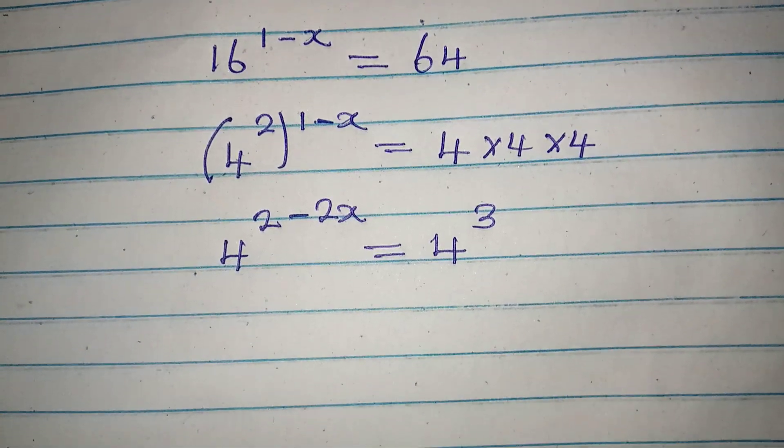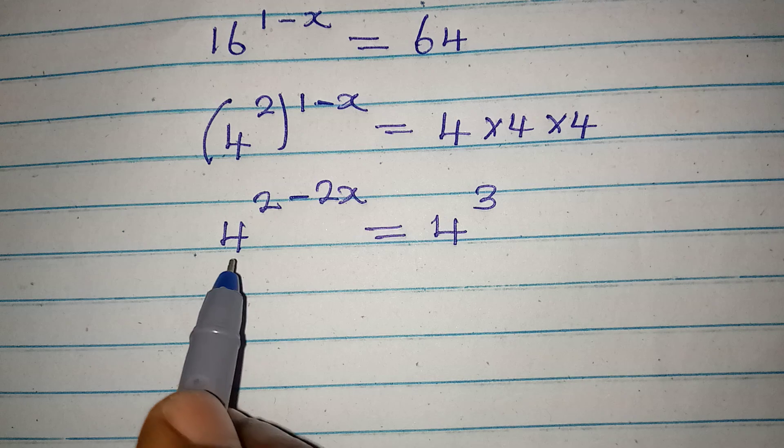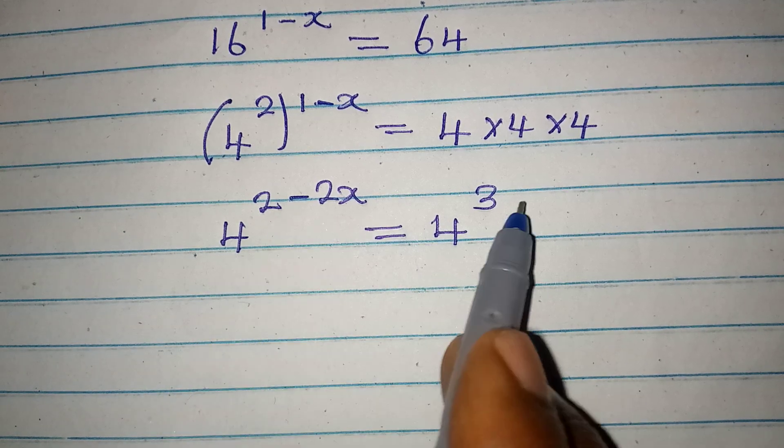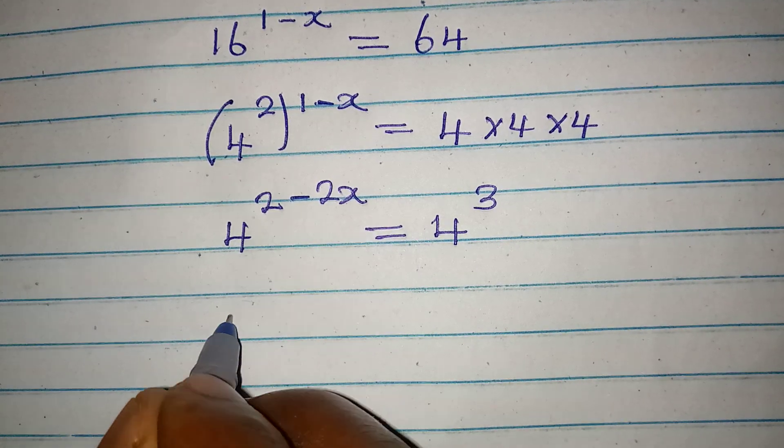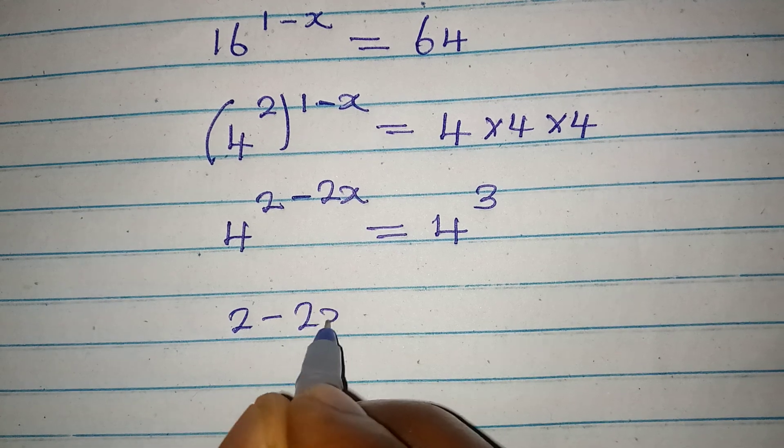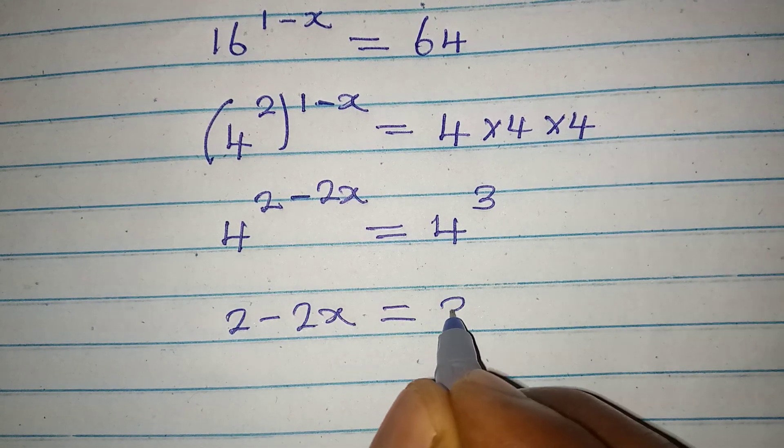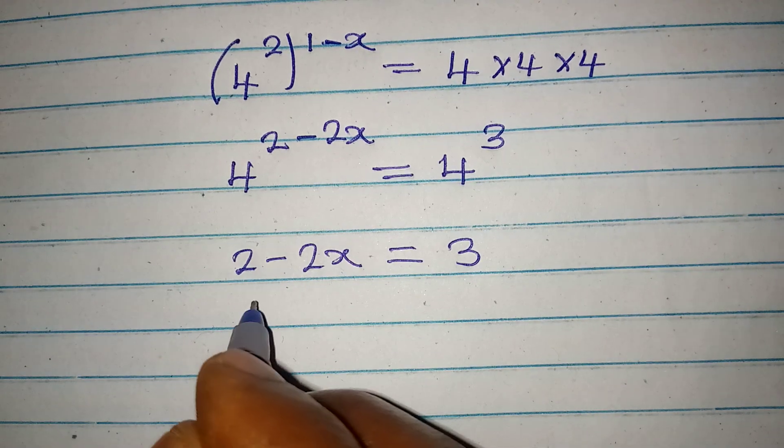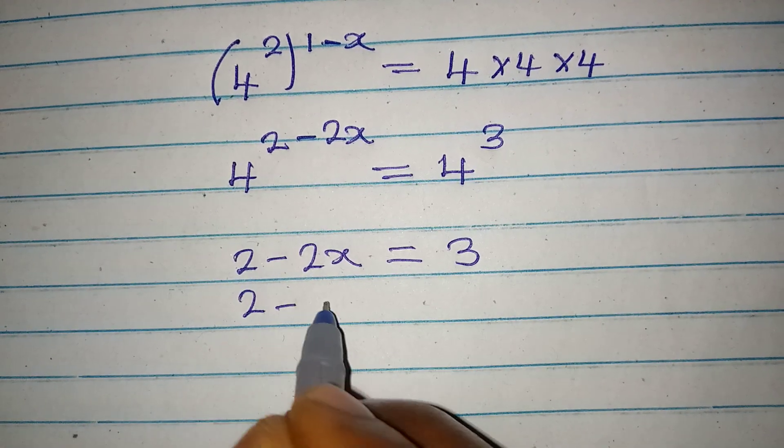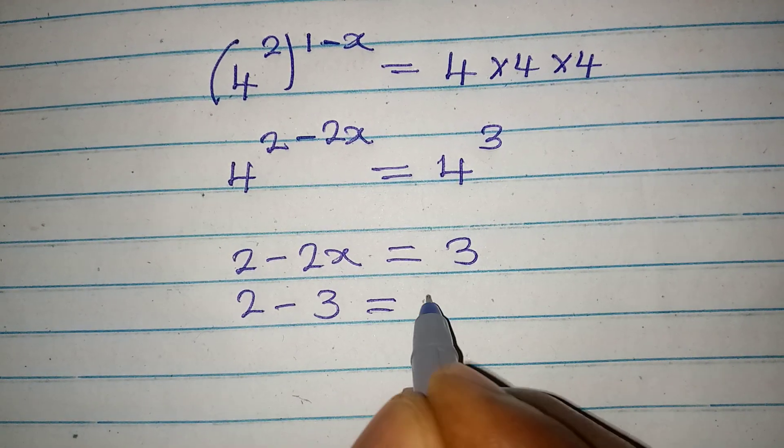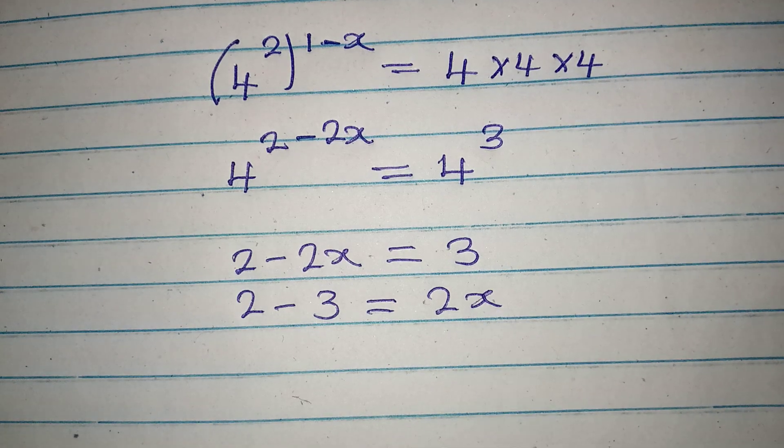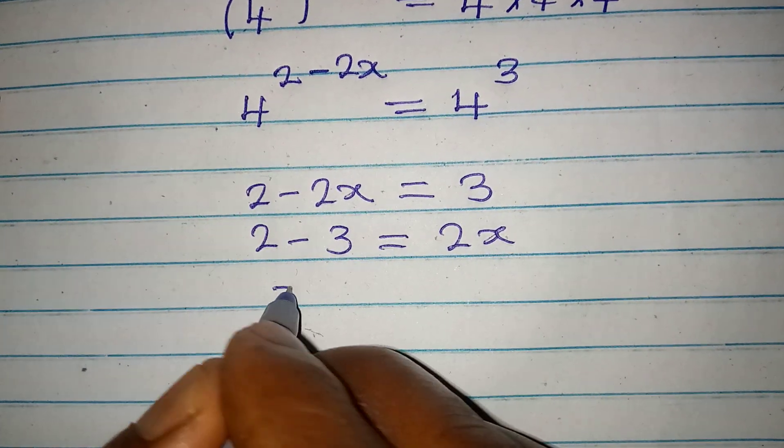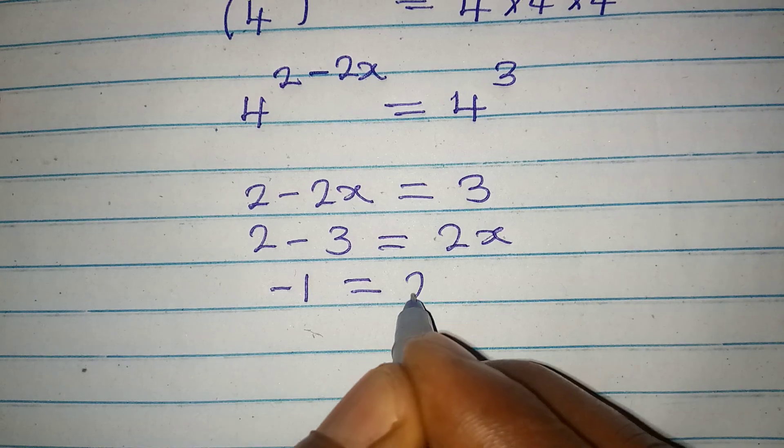That's 4 to the power of 3. Now we have the same base and we can equate the powers so that 2 minus 2x will be equal to 3. And then from here, 2 minus 3 is equal to 2x.